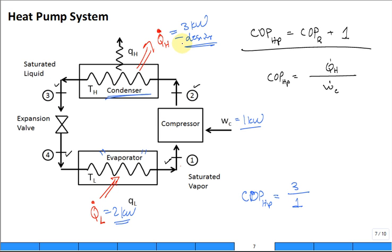And we just said, if this is two and this is one, that has to be three. So this is W dot compressor plus Q dot L divided by W dot compressor. It's one plus COP refrigeration.